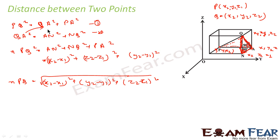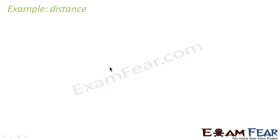To summarize: PQ² = QA² + PA², and QA² = AN² + NQ². Adding these, PQ² = AN² + NQ² + PA². AN involves displacement only along X, giving (X2 − X1)²; NQ involves displacement only along Z, giving (Z2 − Z1)²; PA involves displacement only along Y, giving (Y2 − Y1)². So the distance formula is PQ = √[(X2−X1)² + (Y2−Y1)² + (Z2−Z1)²]. We will take one example.